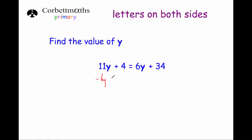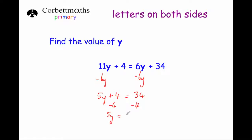Subtracting 6y from both sides: 11y minus 6y gives 5y, so we have 5y + 4 = 34. Now it's a two-step equation: subtract 4 from both sides to get 5y = 30, then divide both sides by 5 to get y = 6.